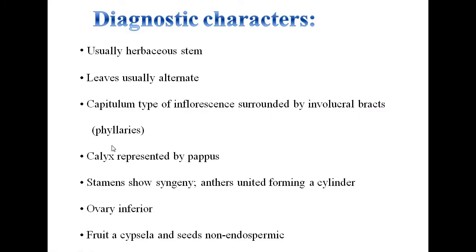Diagnostic characters: usually herbaceous stem, leaves usually alternate, capitulum type of inflorescence surrounded by involucral bracts called phyllaries, calyx represented by pappus, stamens showing syngenesious condition with anthers united forming a cylinder, ovary inferior, fruit a cypsela, and seed non-endospermic. These are the diagnostic characters of family Asteraceae.